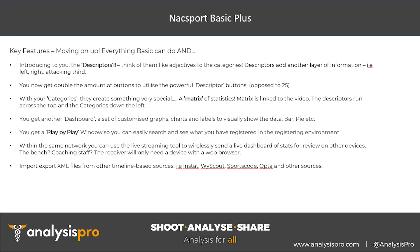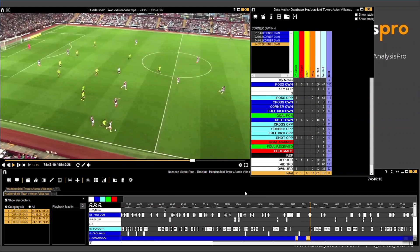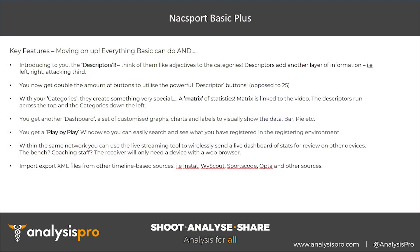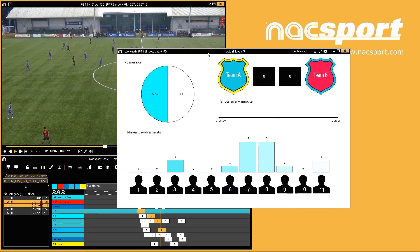That something special is the matrix — another terminology we use within the Naxport software. The matrix displays all your categories down the left and all your descriptors across the top, so you can easily find those moments. For example, if you're looking for all the shots on target you can quickly go to the grid and see you had seven — pressing that number will then display the video. The matrix is linked to the video, so it's really powerful when reviewing footage or presenting. You also get two dashboards now instead of one — for example an individual dashboard for players and a team dashboard overall.